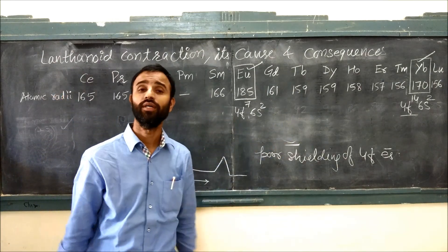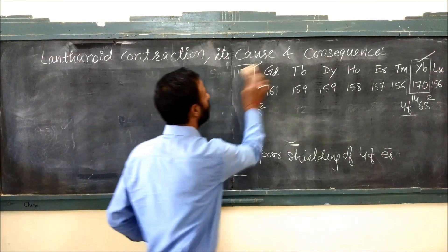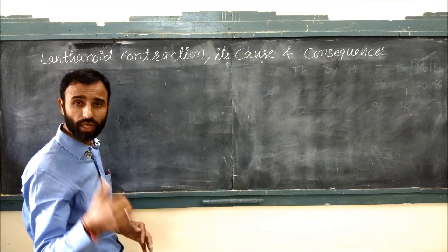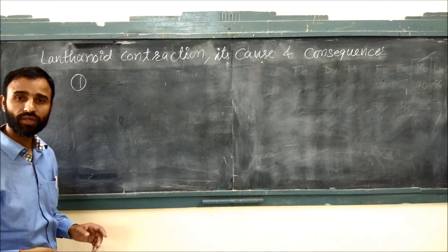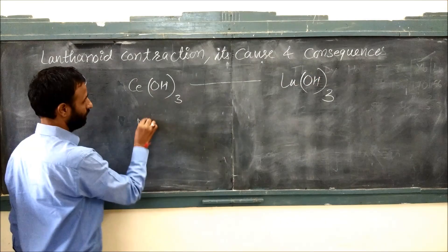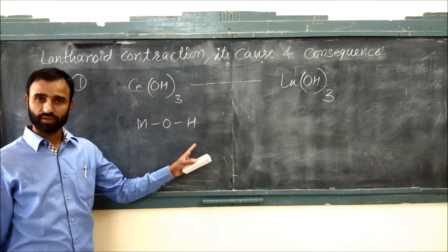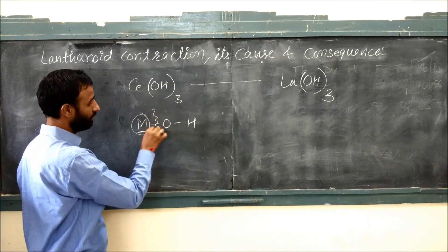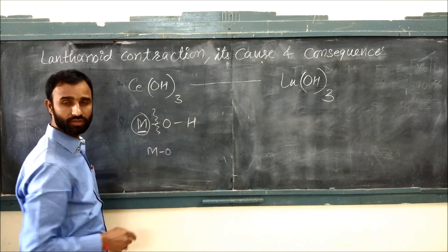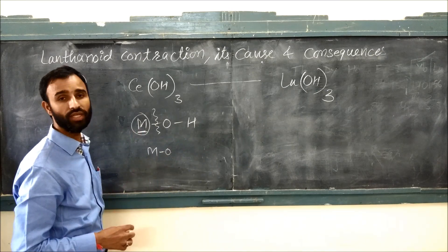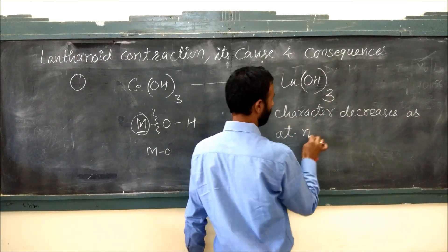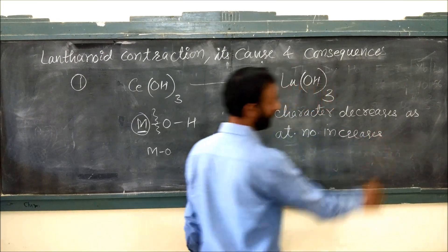This is an exception, but we can explain it: they have exactly half-filled and fully filled electronic configurations. Now let us talk about consequences. The first consequence is that as we go along the series, with the exception of europium and ytterbium, there is a decrease in size. That's why, comparing cerium hydroxide to lutetium hydroxide, the basic character decreases as atomic number increases because of lanthanoid contraction.